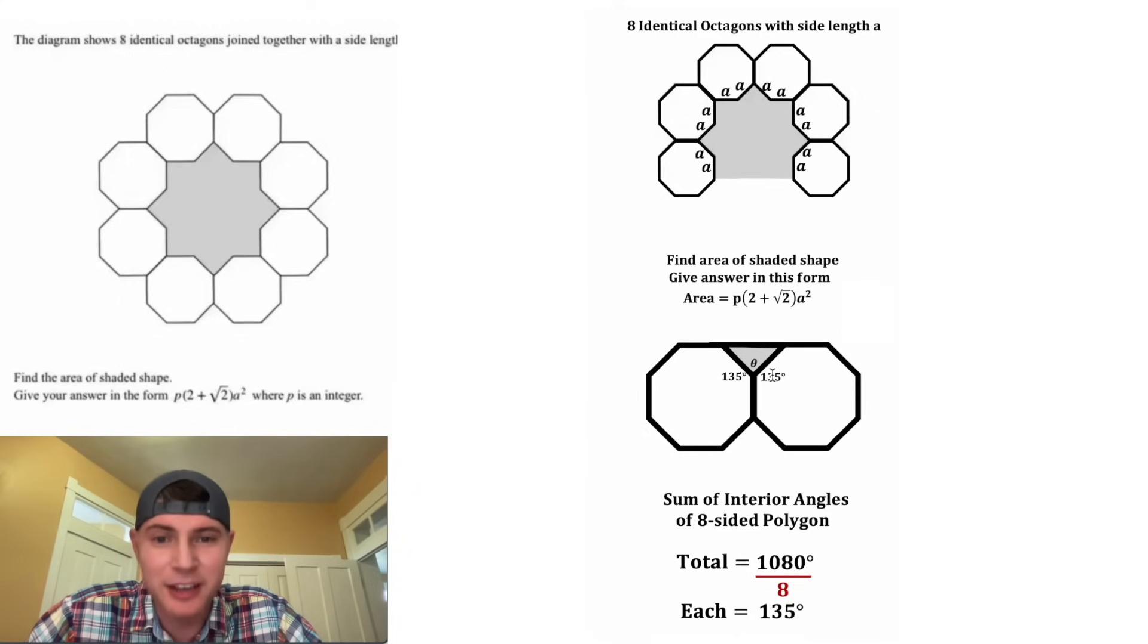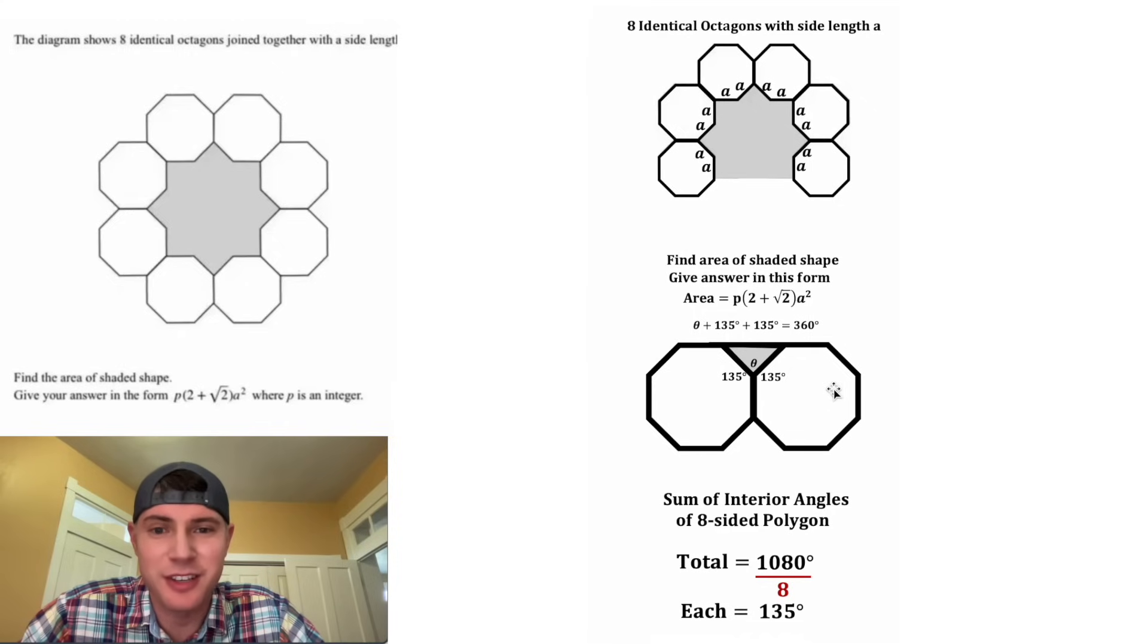And now we're ready to find this angle theta. All three of these angles are gonna add to 360 degrees. So that means theta plus 135 plus 135 will be 360. 135 plus 135 is 270, and then we can subtract 270 from both sides.